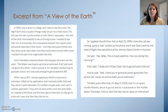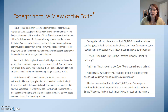We're going to read an excerpt, a few pages from A View of the Earth. In 1984, I was a senior in college and I went to see the movie The Right Stuff, and a couple of things really struck me. The first was the view out the window of John Glenn's spaceship — the view of the earth, how beautiful it was on the big screen. I wanted to see that view. And secondly, the camaraderie between the original seven astronauts depicted in that movie — how they were good friends, how they stuck up for each other, how they would never let each other down. And it rekindled a boyhood dream that had gone dormant over the years. That dream was to grow up to be an astronaut, and I just could not ignore this dream. I had to pursue it.